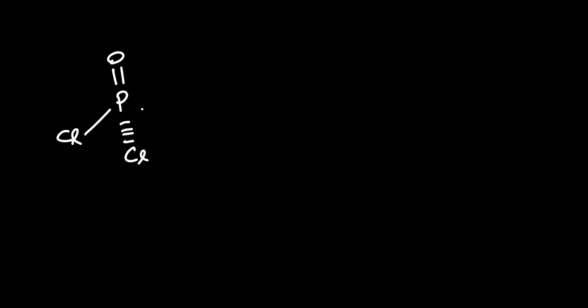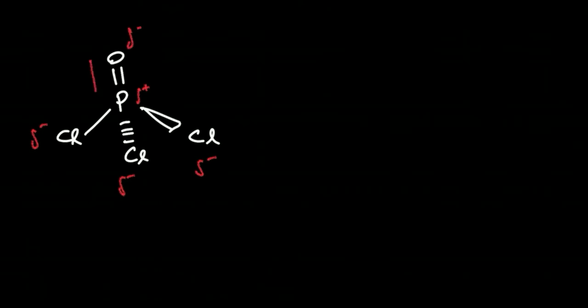The next structure is POCl3. It is going to be a tetrahedral structure, and there will be a slight negative charge here, slight negative charge here, slight negative charge here, slight negative charge here, and then this is delta positive. Therefore, in this case too, the dipoles won't cancel out, so the net dipole moment is not equal to zero.